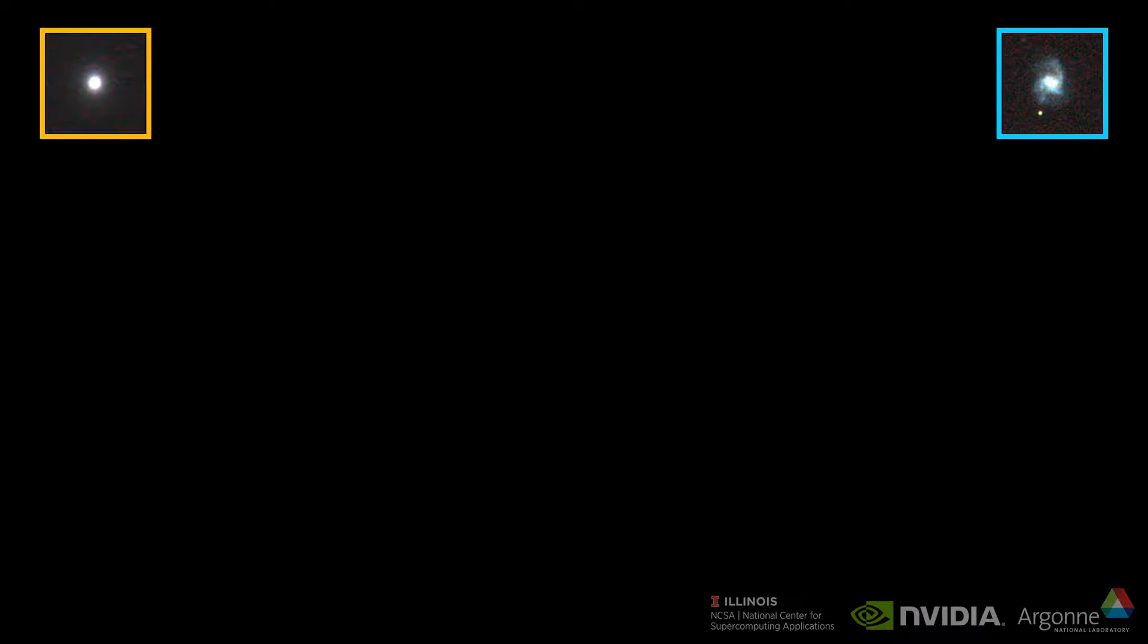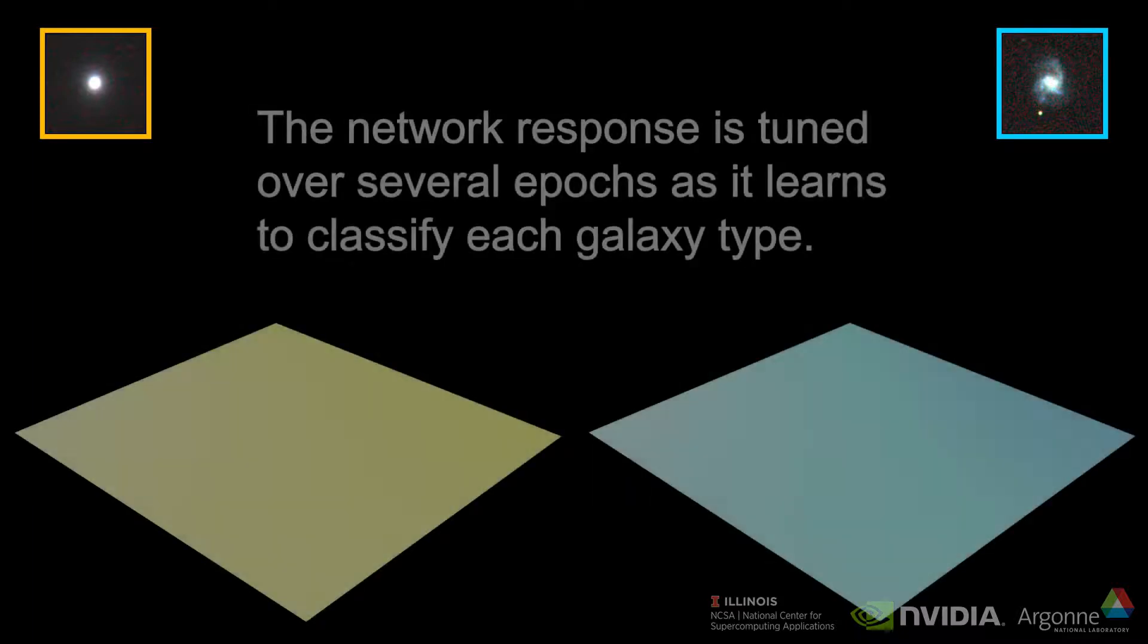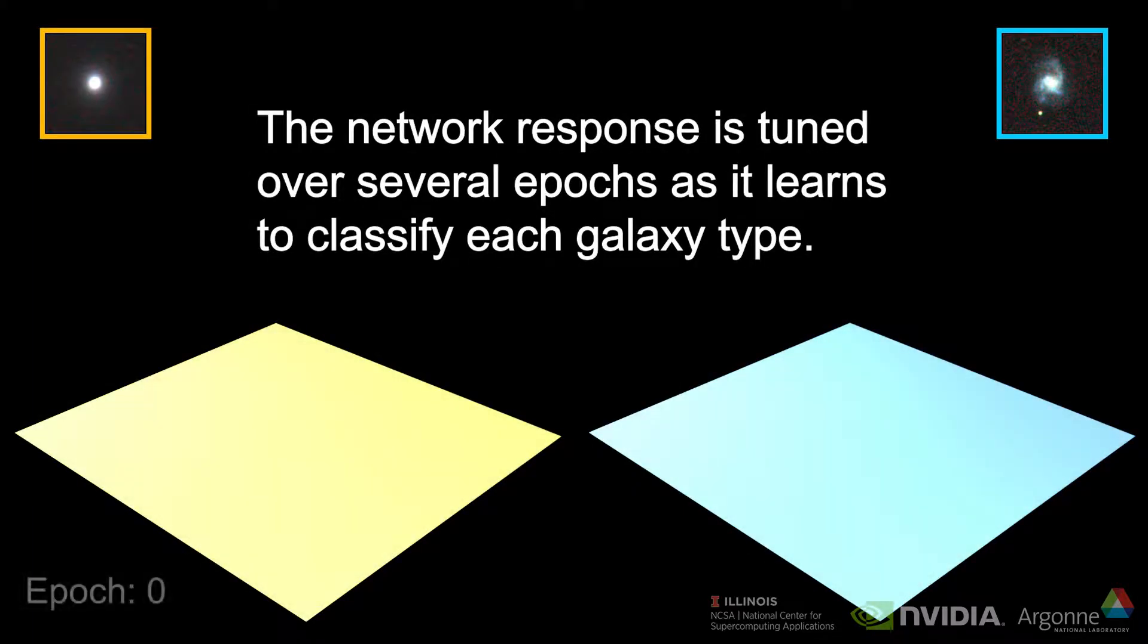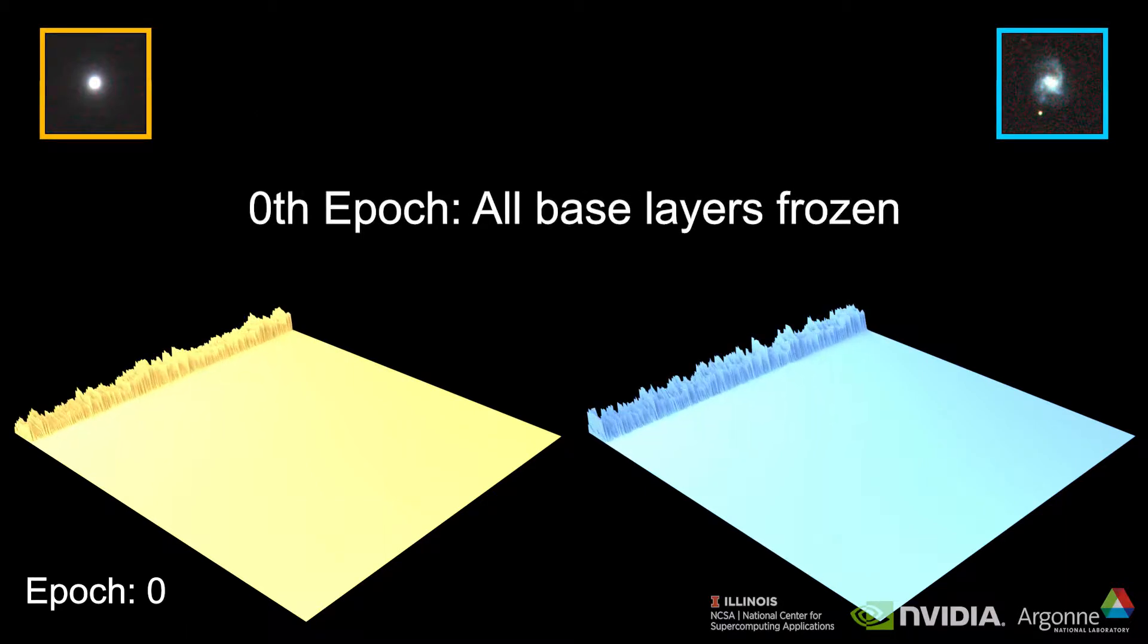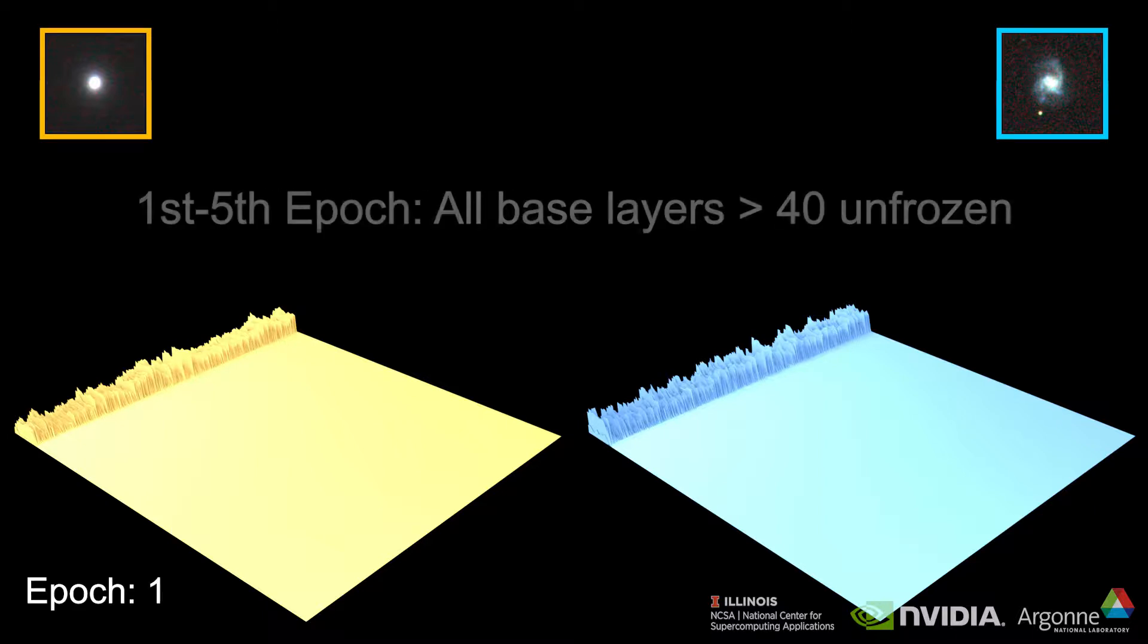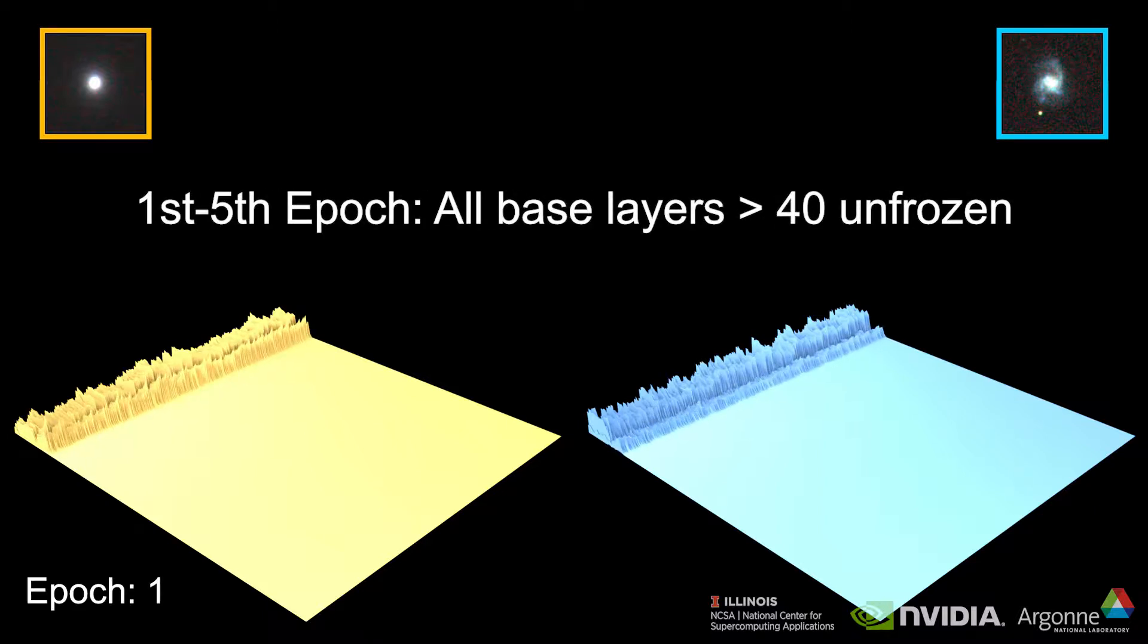As the weights in the neural network are trained, we can visualize their response at each stage or epoch in the training process. Here we are visualizing the output from the penultimate layer in the network. These two images of a spiral and elliptical galaxy elicit similar responses from the network in the beginning, as it has not learned to distinguish them.